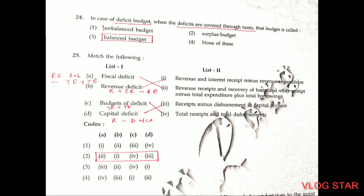Question number 24. In the case of a deficit budget, when the deficit is covered through taxes, that budget is called a balanced budget. The balanced budget multiplier (BBM) is equal to 1. Question number 25 — Matching: Fiscal deficit equals revenue receipts, recovery of loans, and other receipts minus total expenditure plus total borrowings. Revenue deficit equals revenue and interest receipts minus revenue expenditure. Budget deficit equals total receipts minus total disbursements. Capital deficit equals receipts minus disbursements in the capital account. The correct matching is 2, 1, 4, 3.